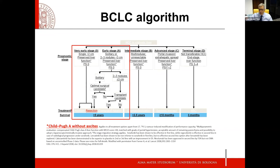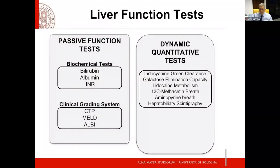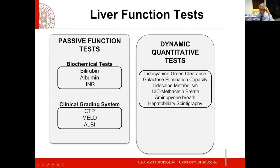Il candidato classico alla resezione è il paziente con assoluto buon compenso epatico, assenza di ipertensione portale e un numero molto limitato di noduli, prevalentemente di piccole dimensioni. Partiamo dai test di funzione epatica più classici, che sono i test di valutazione passiva: test biochimici, in particolare albumina, bilirubina e INR. Da questi derivano gli score a cui facciamo ancora oggi riferimento, alcuni misti clinici e laboratoristici, altri più stringenti e basati su dati numerici ricavati dal laboratorio.